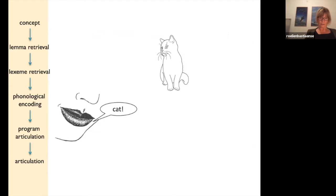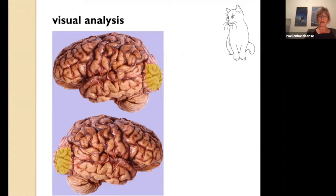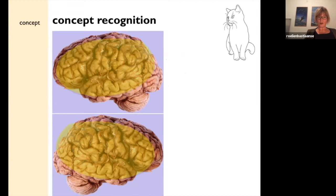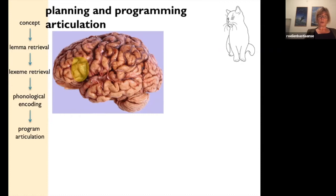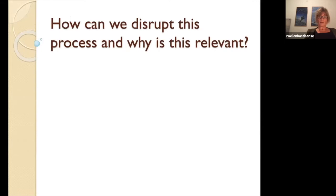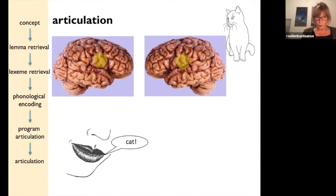To recap: you do the visual analysis of the picture, you recognize the concept, you retrieve the lemma, you retrieve the lexeme, you fill in the right phonemes and apply the phonological rules, you program your articulation, and you articulate the word. What you see is that basically the whole cortex and several subcortical tracts are involved in just naming a picture of the word 'cat.'